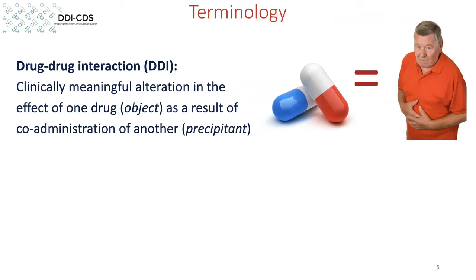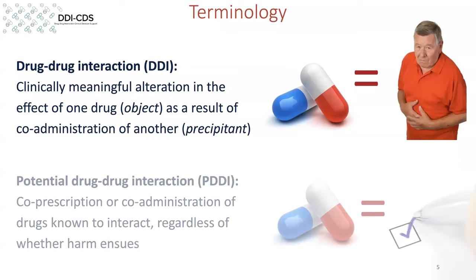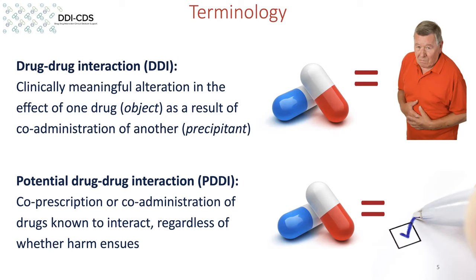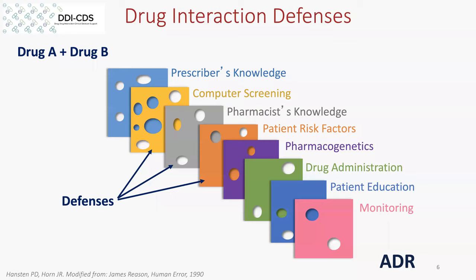When we talk about drug interactions, the technical definition is the clinically meaningful alteration of the effect of one drug as a result of administration of another drug — we typically call those object and precipitant drugs — and that would manifest in a patient resulting in some degree of harm. However, most of the time we're talking about potential drug interactions where we don't necessarily determine if harm ensues. A lot of potential drug-drug interactions occur, but they don't necessarily result in harm, and our goal is to identify situations where patients are harmed.